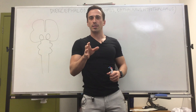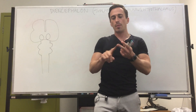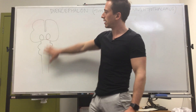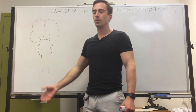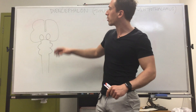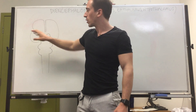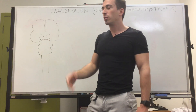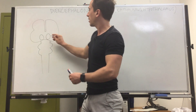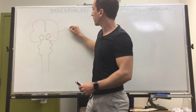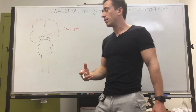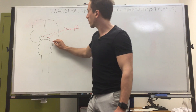Now let's take a look at the diencephalon. The diencephalon comprises the thalamus, the epithalamus, and the hypothalamus. Going back to what we spoke about in a previous video — the cerebrum with the diencephalon together is known as the prosencephalon, but you can refer to them separately as the telencephalon and the diencephalon. These two parts are the diencephalon, which is where we're going to find the thalamus, hypothalamus, and epithalamus.